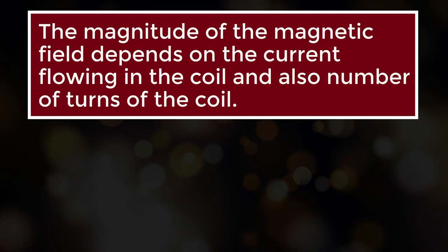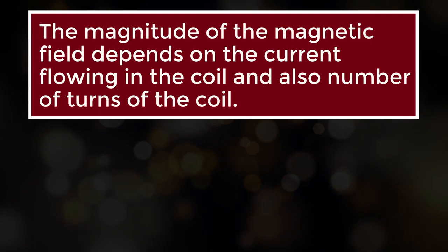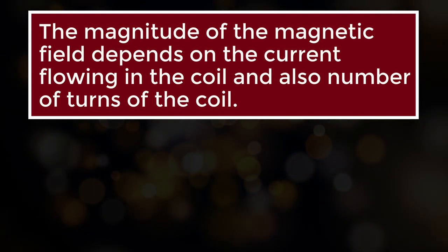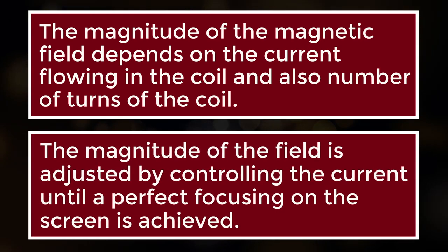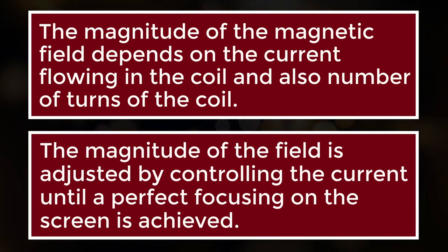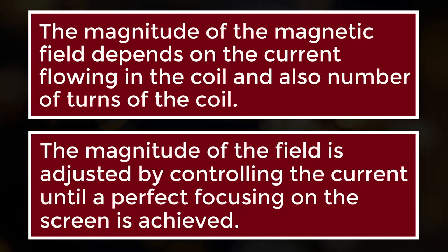The magnitude of the magnetic field depends on the current flowing in the coil and the number of turns of the coil. The magnitude of the field is adjusted by controlling the current until perfect focusing on the screen is achieved.